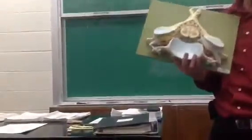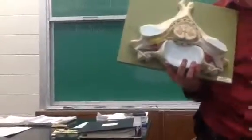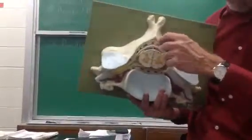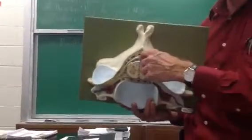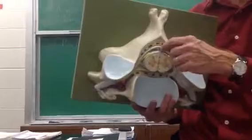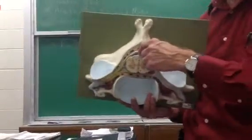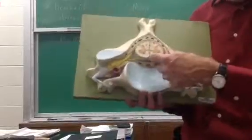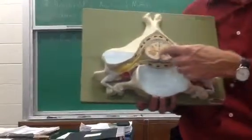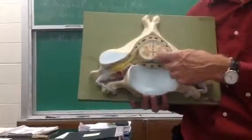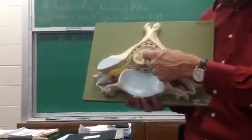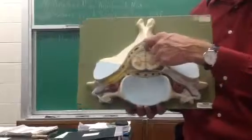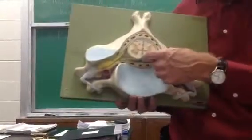You can tell anterior from posterior on the spinal cord at a glance because the posterior surface has only a very shallow groove in it. A shallow groove in anatomical terminology is the sulcus, so we have a posterior median sulcus on the posterior surface. In front, there's a very deep cleft — a fissure. That's how you can tell this is anterior. There's an anterior median fissure in front, very deep. So posterior median sulcus in back, anterior median fissure in front.